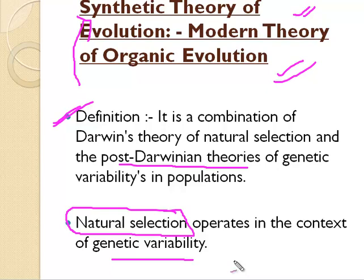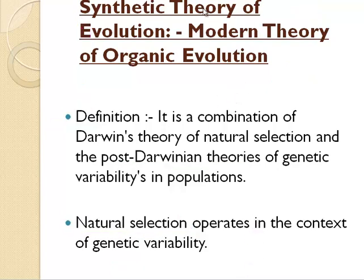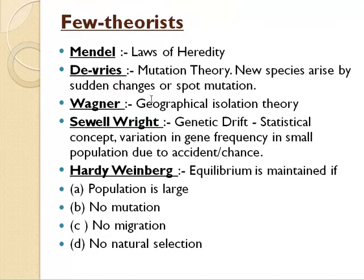Many theories came regarding genetics, including Mendelian genetics. The combination of all these is known as the synthetic theory. Now let's look at the post-Darwinian theorists one by one. The first is Mendel, who gave the laws of heredity. You will study Mendel in detail in chapter 9 of anthropology. He conducted pea plant experiments and gave three to four laws regarding heredity.